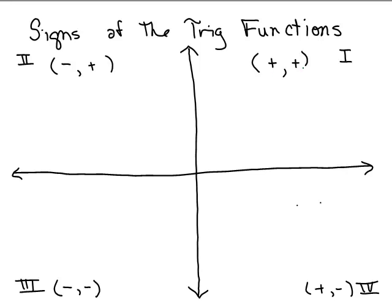In quadrant 1, if I wanted to get the cosine or the sine, I'm going to end up putting a positive number over R, so it's going to be positive. The tangent will be Y over X, so it'll be a positive over a positive. For the sine, cosine, and tangent, they're all positive, so all the reciprocals will be positive too. All the trig functions are positive in quadrant 1.